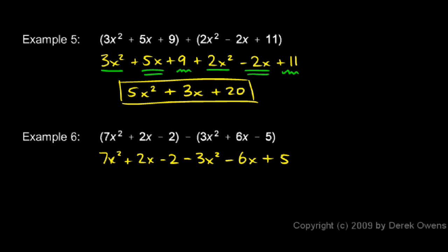And once again, you can think of this negative sign as being distributed across these three terms. The negative applies to the 3x², it applies to the 6x, and it applies to the -5, making it a positive 5.